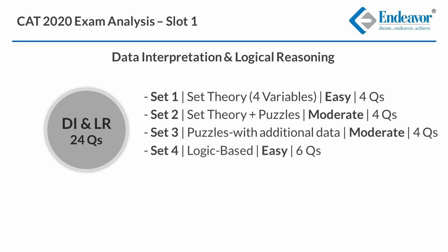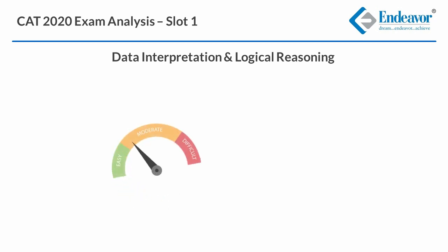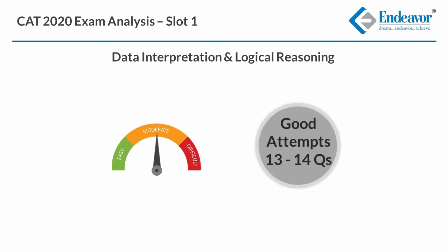Set 4, which carried 6 questions, was a logic-based DI set and was easy. But set 5, which also carried 6 questions and was also logic-based DI, was certainly a difficult one. However, the DILR sectional overall can be considered moderate. Good attempts in this sectional can be marked as 13-14 questions.